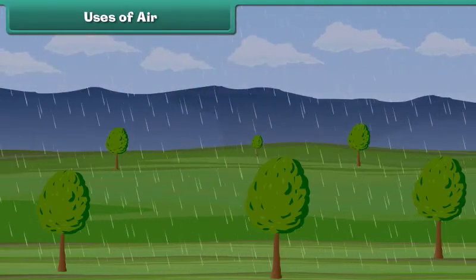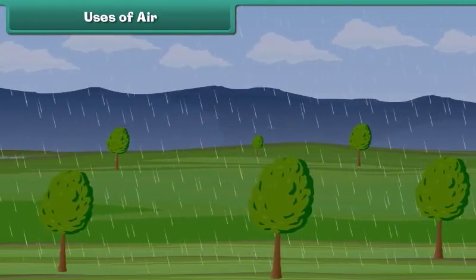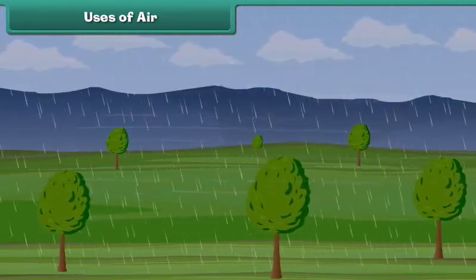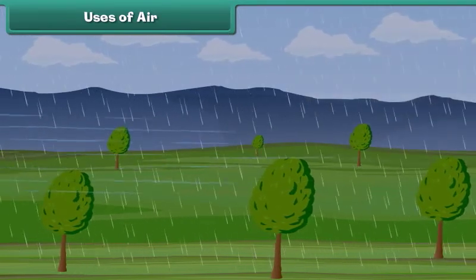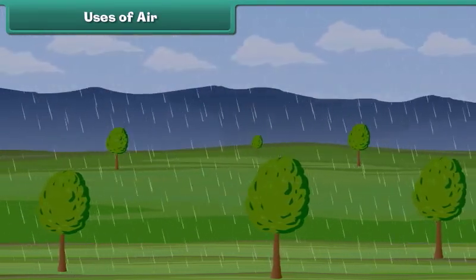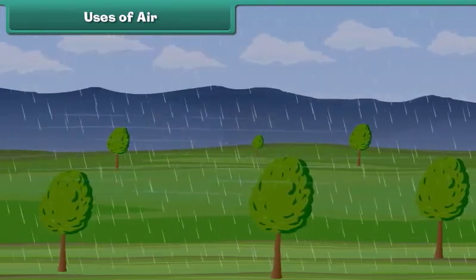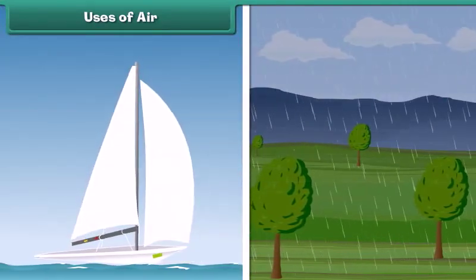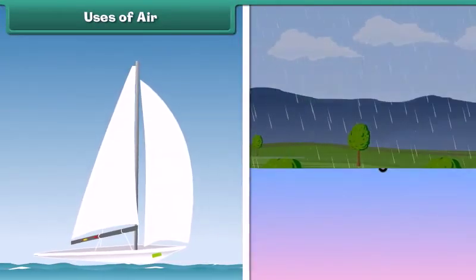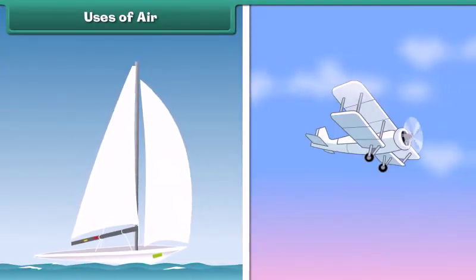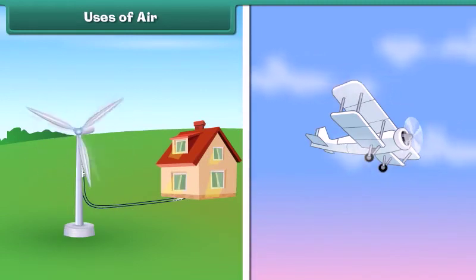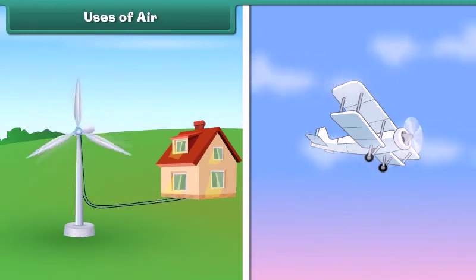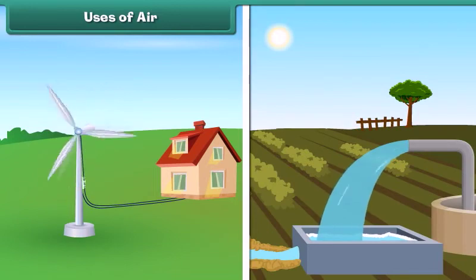Moving air is known as wind. Wind moves clouds and causes rain. Wind helps sailboats and gliders to move. The power of wind is also used to generate electricity, and wind power helps pump water.